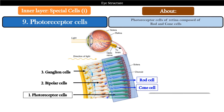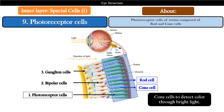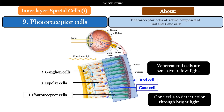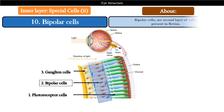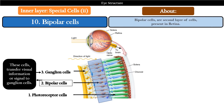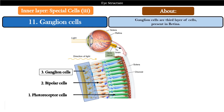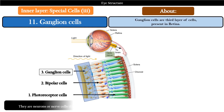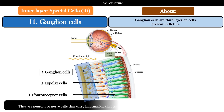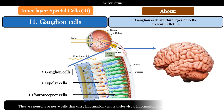Cone cells detect color through bright light, whereas rod cells are sensitive to low light. Bipolar cells are the second layer of cells present in the retina — these cells transfer visual information or signals to ganglion cells. Ganglion cells are the third layer of cells present in the retina. They are neurons, or nerve cells, that carry and transfer visual information into the brain via the optic nerve.